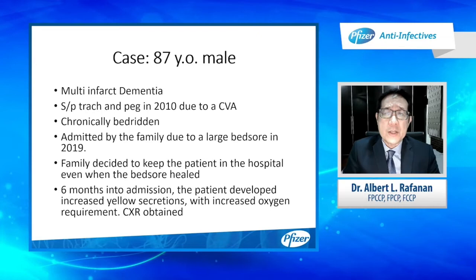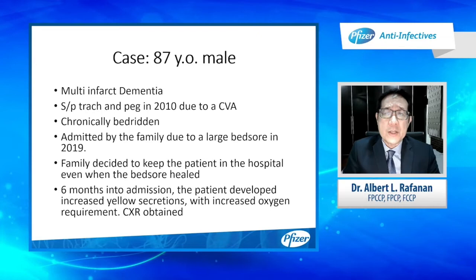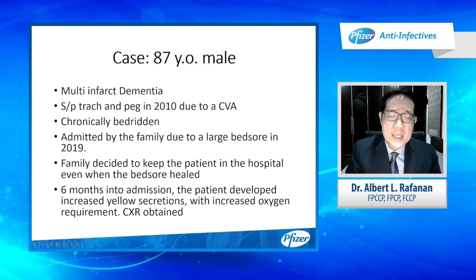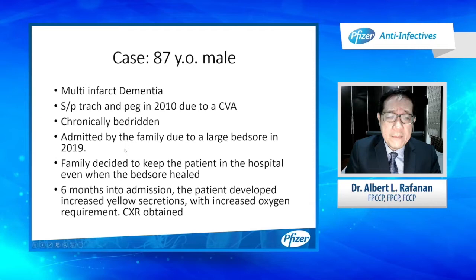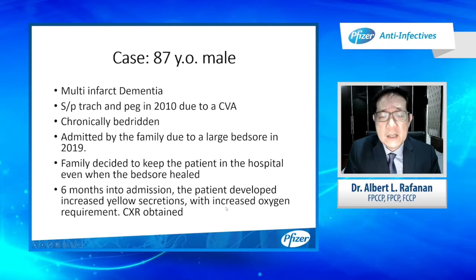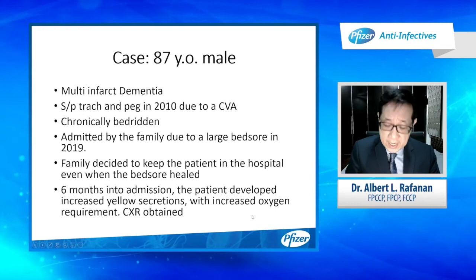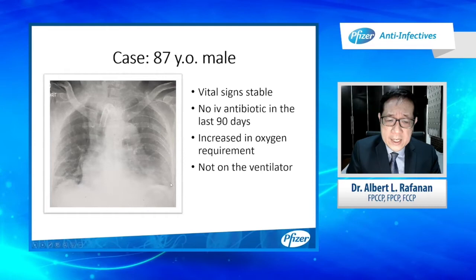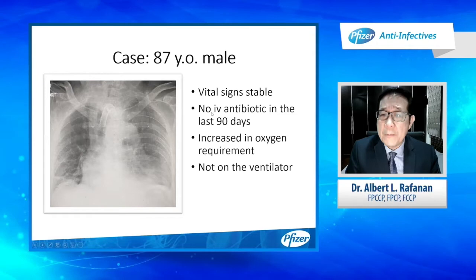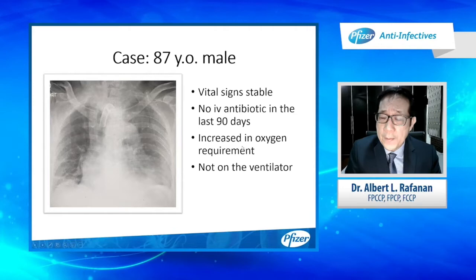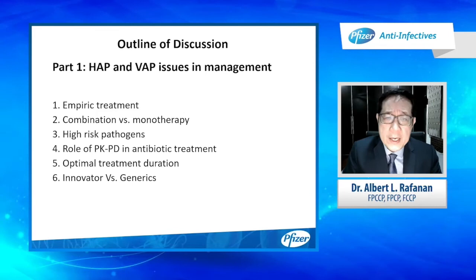Let's present a case. This is an 87-year-old gentleman with multi-infarct dementia who had a tracheostomy and PEG in 2010 due to a massive CVA. He had been chronically bedridden at home but was admitted by the family in 2019 because of a large bed sore and social issues. After the bed sore healed, the family decided to keep him in the hospital. Six months into admission, the patient developed increased yellow secretions with increased oxygen requirement. A chest x-ray showed bilateral infiltrates, predominantly on the left lower lobe. Vital signs were stable. The patient had not received IV antibiotics in the last 90 days and was not on the ventilator.